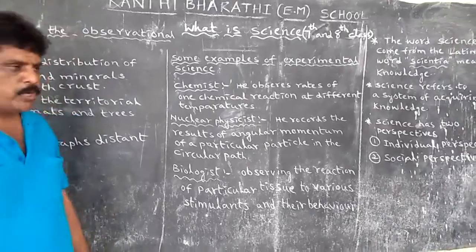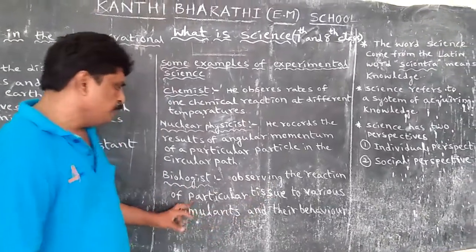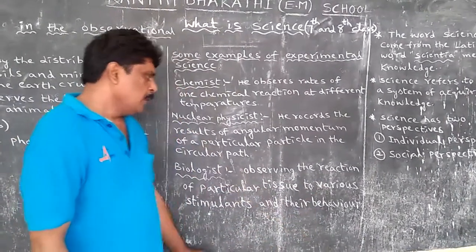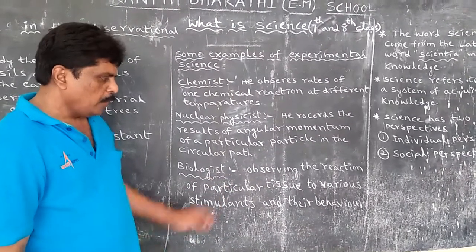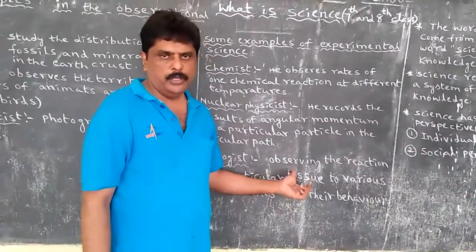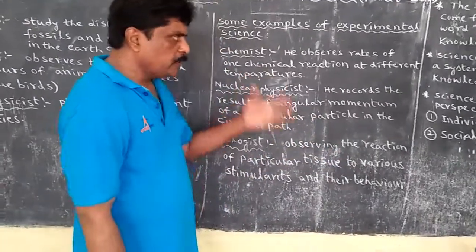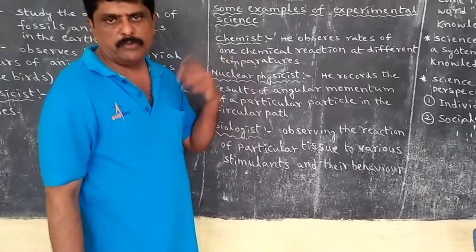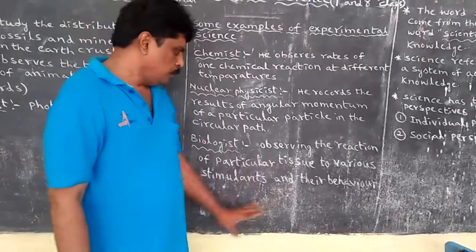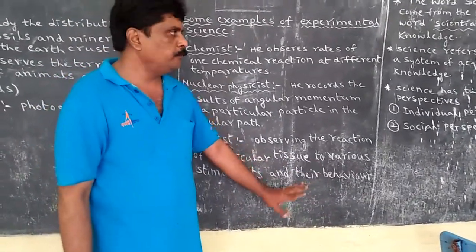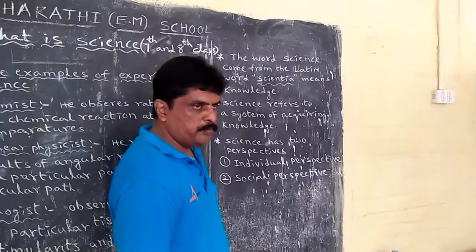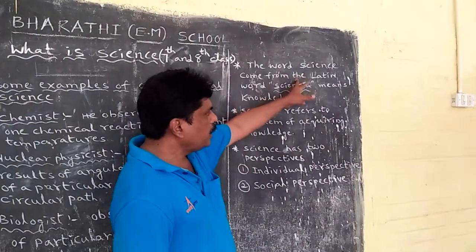Another example for experimental science is biologist. A biologist observes the reaction of particular tissues to various stimulants and their behavior. So here we have to understand body tissue and what a cell is more closely. Biologists observe the reaction of particular tissue to various stimuli and behavior.